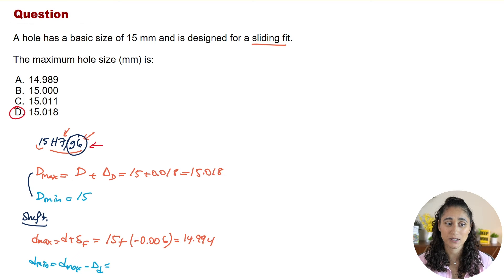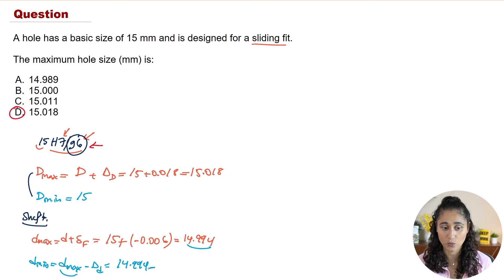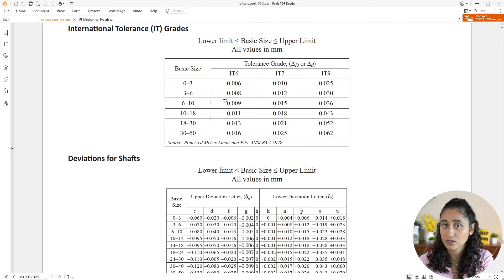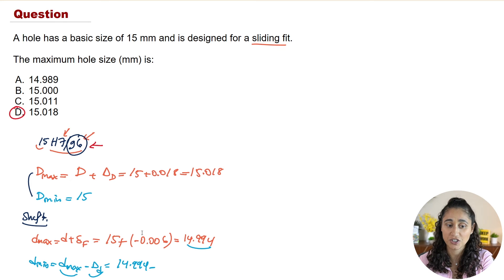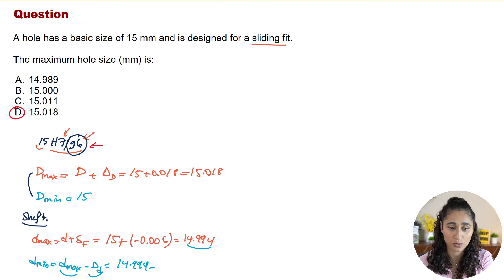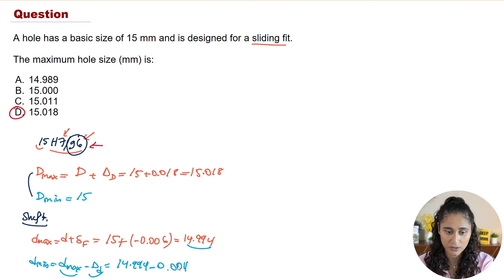For the minimum shaft size, we start with the maximum shaft diameter of 14.994 and subtract the tolerance. For the shaft we have IT6 since the symbol is G6, so using the tolerance table with a basic size of 15, the tolerance is 0.011. Therefore, D_min for the shaft equals 14.994 minus 0.011. That's how we determine the size limits for both the hole and the shaft.